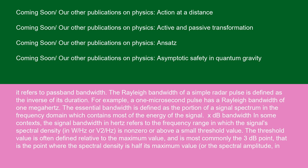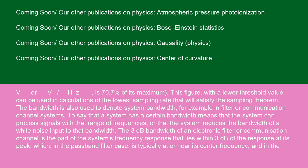X dB bandwidth: in some contexts, the signal bandwidth in Hz refers to the frequency range in which the signal's spectral density, in W-Hertz or V² -Hertz, is non-zero or above a small threshold value. The threshold value is often defined relative to the maximum value, and is most commonly the 3 dB point that is the point where the spectral density is half its maximum value, or the spectral amplitude in V or V -HZ, is 70.7% of its maximum. This figure, with a lower threshold value, can be used in calculations of the lowest sampling rate that will satisfy the sampling theorem. The bandwidth is also used to denote system bandwidth, for example, in filter or communication channel systems. To say that a system has a certain bandwidth means that the system can process signals with that range of frequencies, or that the system reduces the bandwidth of a white noise input to that bandwidth.